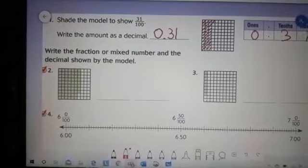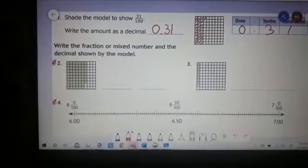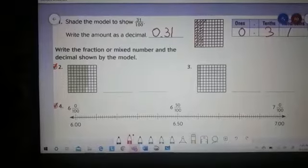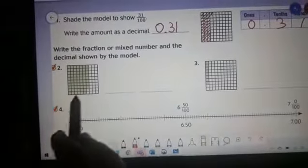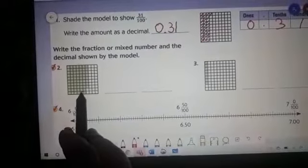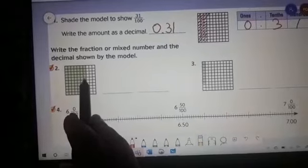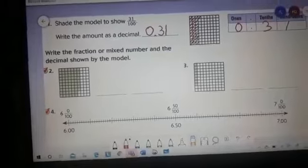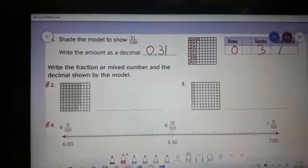Let's try the second question. Write the fraction or mixed number and the decimal shown by the model. Look at the model. According to the model, out of 100 grids: 10, 20, 30, 40, 50, 60, 61, 62, 63, 64, 65, 66, 67, 68 parts are shaded. So first let's write them down in fraction: 68 over 100.